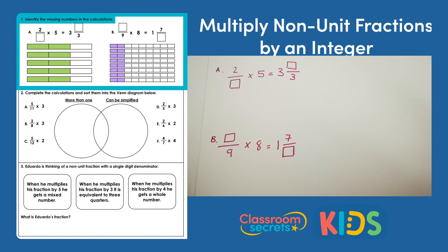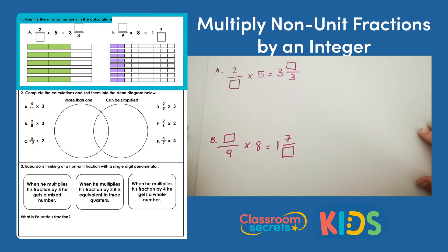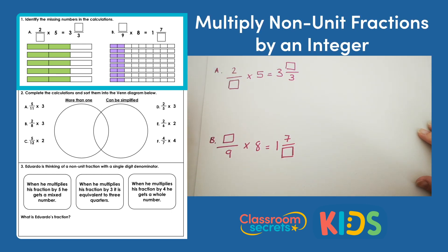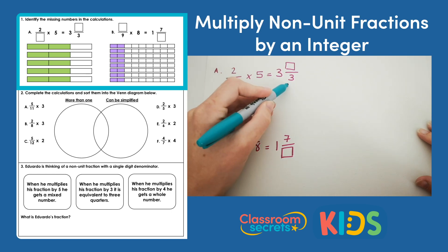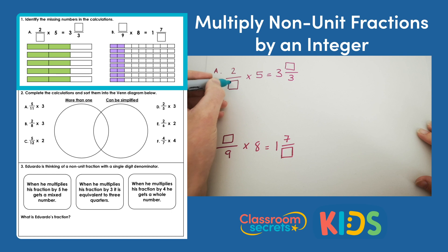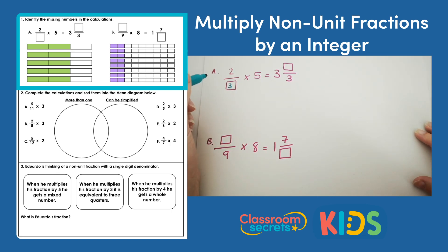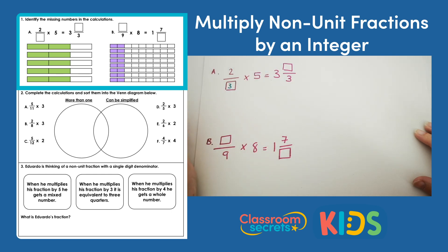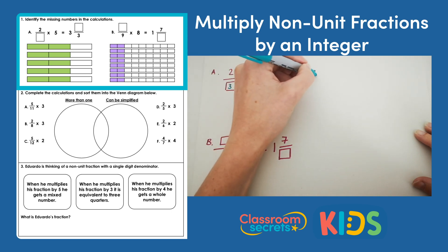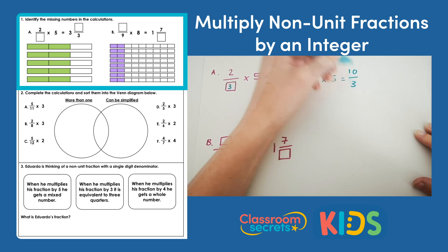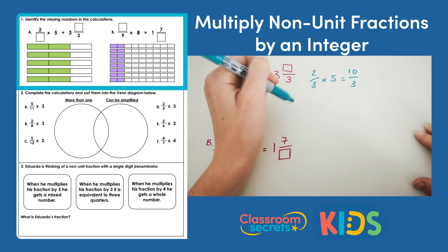Question 1: identify the missing numbers in the calculations. For question a, we have 2 something times 5 equals 3 something thirds. I know from looking at the pictures and the denominator in the answer that the denominator at the beginning must be 3. The pictures are cut up into thirds and the denominator doesn't change when you multiply fractions by integers. So 2 thirds times 5 gives me 10 thirds, because 5 times 2 is 10. We don't change the denominator.